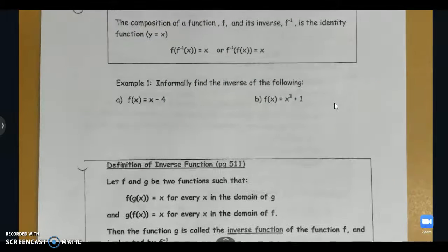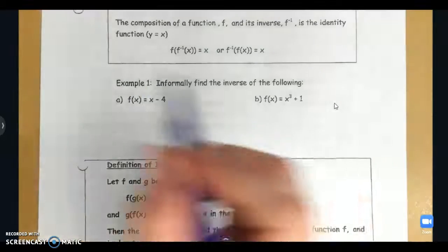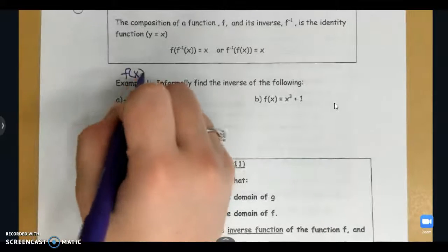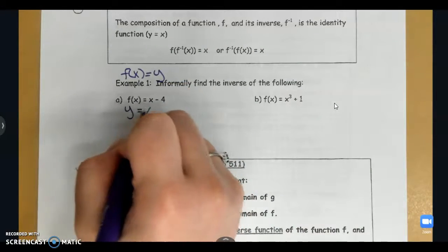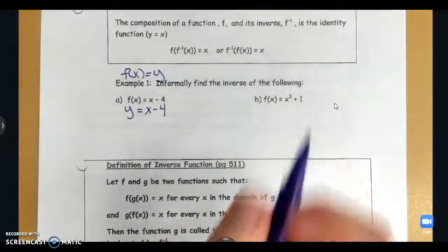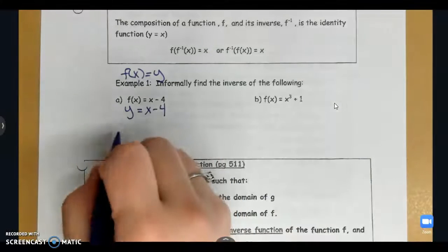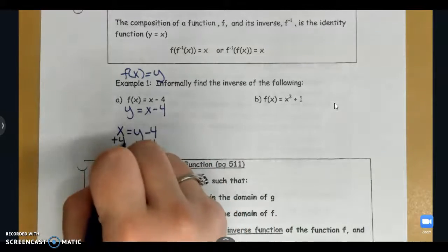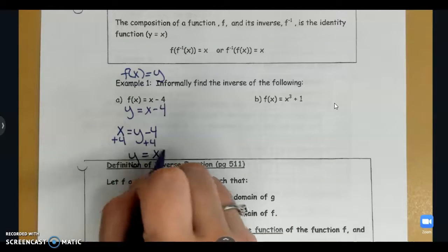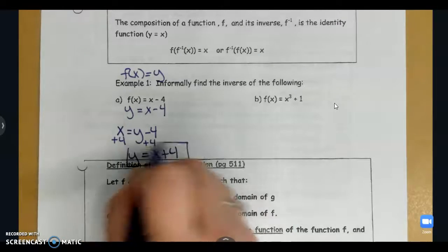We find the inverse by swapping the x and the y in the function and then solving for y. Remember f of x is the same thing as our y values. So if I rewrote this as y equals x minus 4, that's the same thing. So to find my inverse, I'm going to swap the x and the y and then solve for y. So y equals x plus 4 is my inverse.